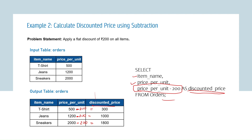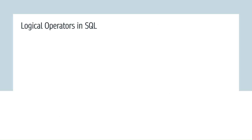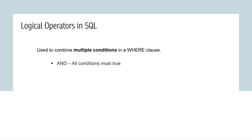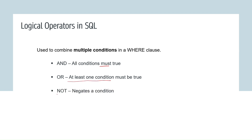That's how you can make use of arithmetic operators to write SQL queries. Let's now move on to understand logical operators in SQL. Logical operators are used to combine multiple conditions in a WHERE clause. There are three logical operators: AND — used when all conditions must be true; OR — used when at least one condition must be true; and NOT — used to negate a condition.